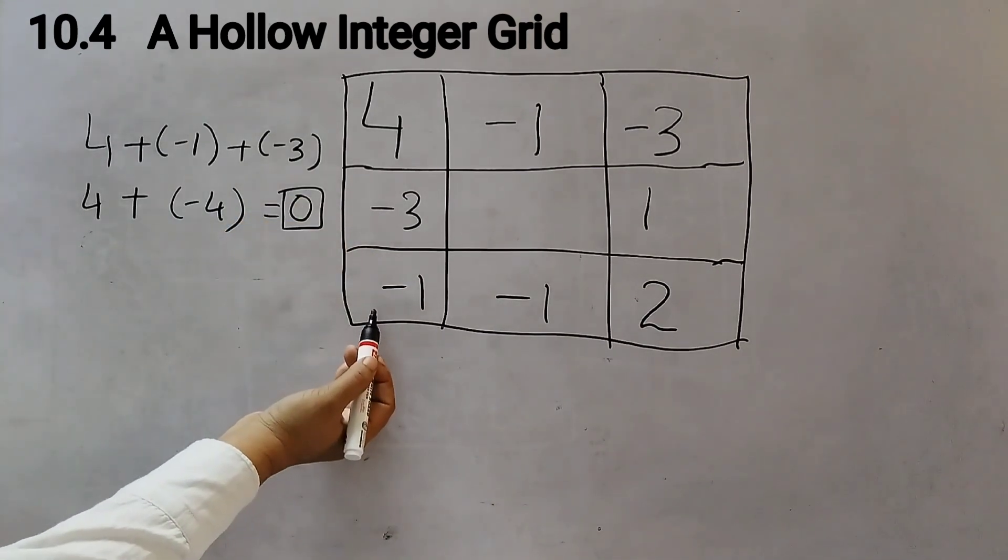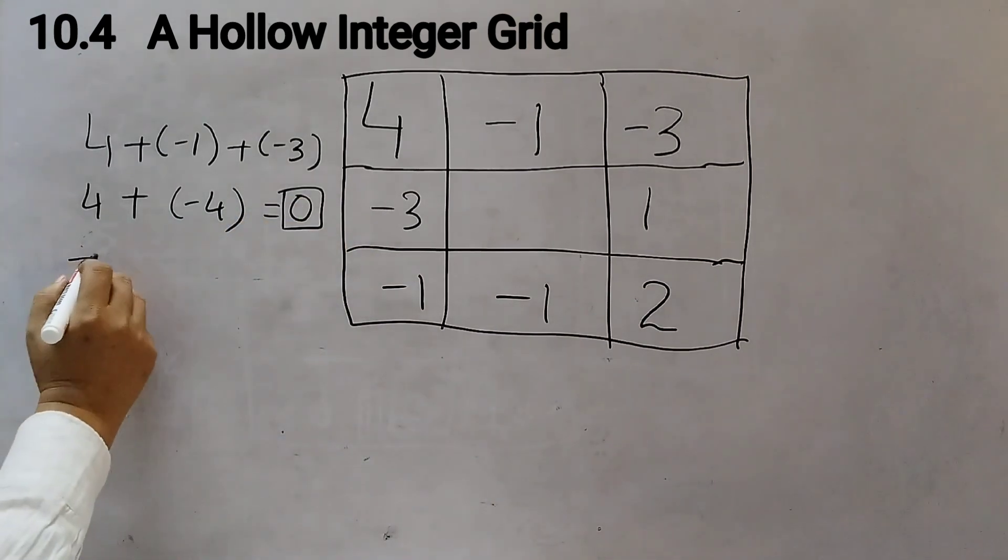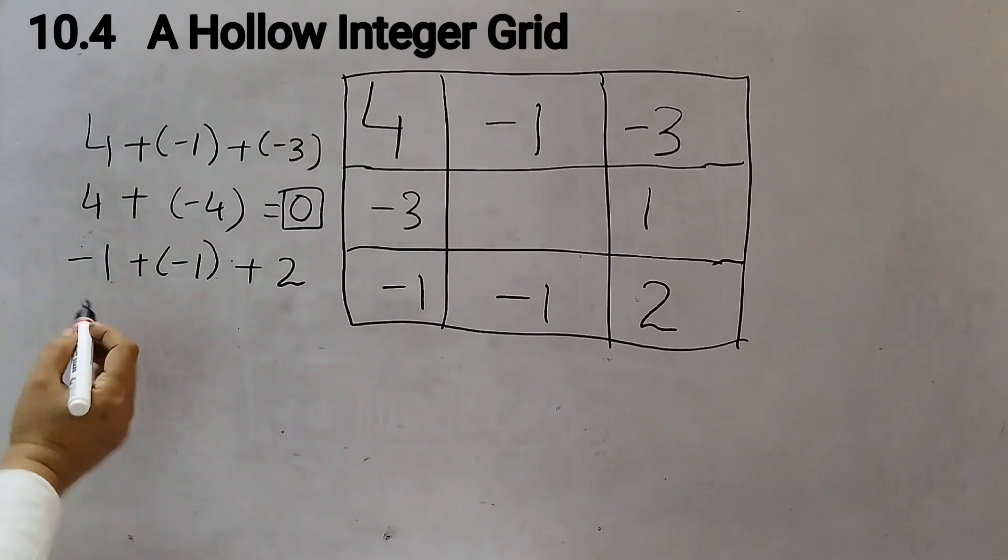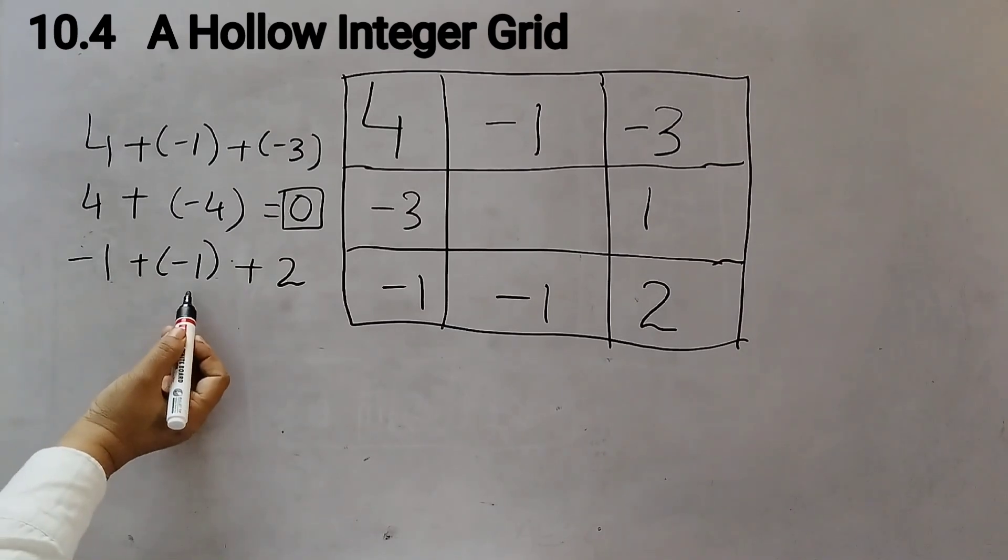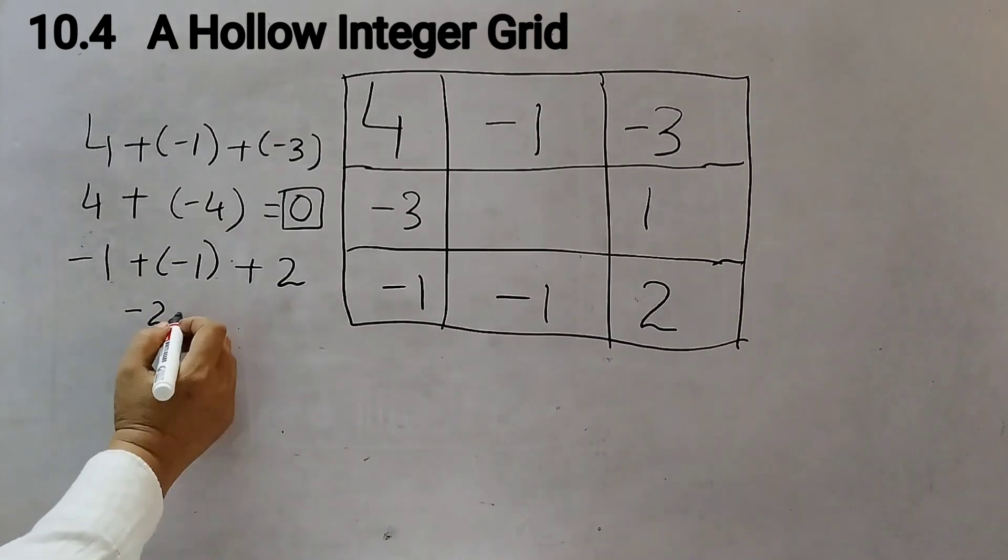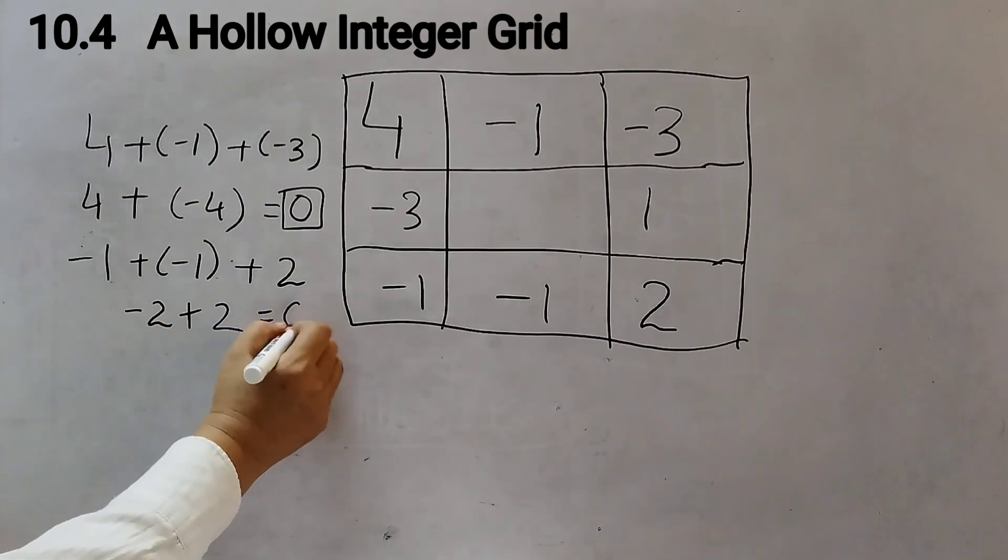Now we will check the bottom row: (-1) plus (-1) plus 2. Minus 1 minus 1 will become minus 2, same sign. Add up the numbers, 1 plus 1 is 2, and then keep the minus sign, plus 2. Minus 2 plus 2 is equal to 0. Again we get a 0.